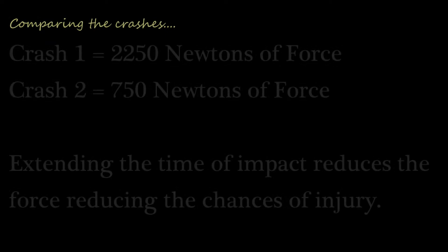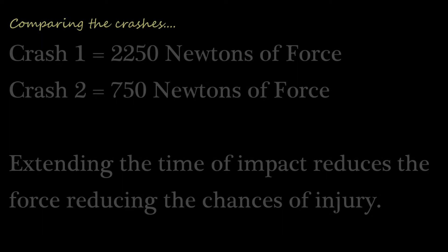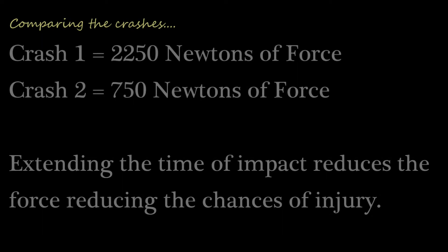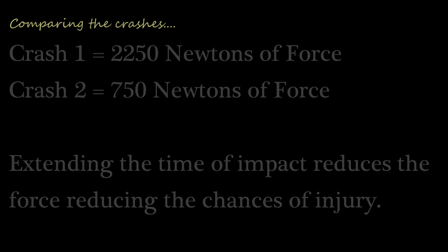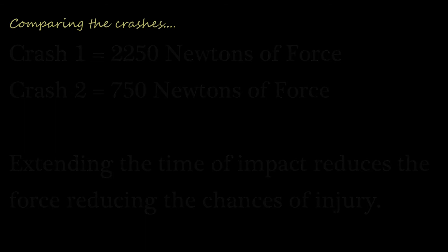So let's compare the crashes now. In crash one, there was no crumple zone to extend the time of impact and extend the time it took to change the momentum. It meant that the time of impact took 0.2 of a second to go from 450 kilogram metres per second to zero. That meant the overall force of the impact was 2250 newtons. In crash two, I extended the time by having crumples on it. This absorbed some of the impact and extended the time it took for the momentum to change to 0.6 seconds. The force of the impact was reduced significantly to 750 newtons of force, which could make all the difference between injury and no injury in a car crash.